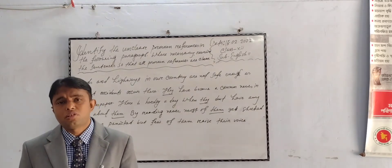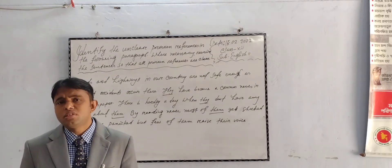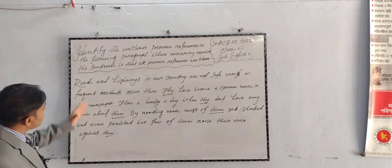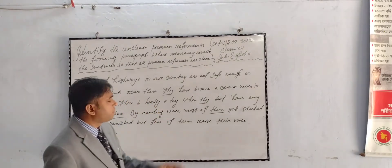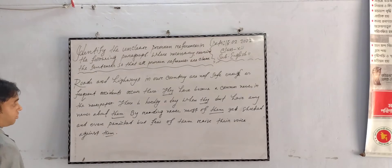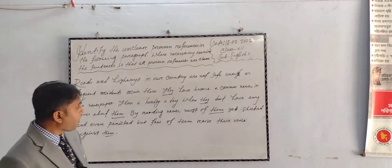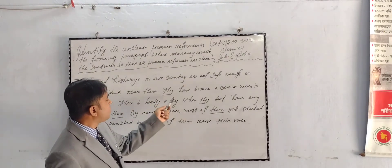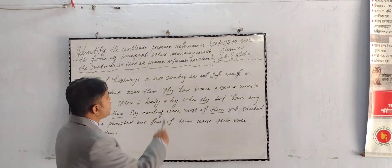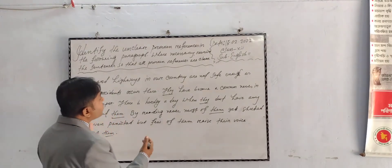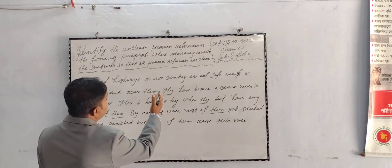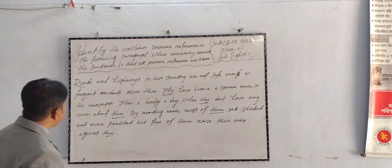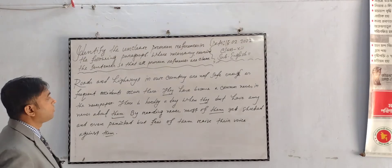We know that a pronoun is used as an alternative to a noun. In this paragraph, there are some pronouns that are very unclear. So we must identify these pronouns and use the noun as an alternative to the pronoun, because these pronouns are unclear. We must use the noun. So at first, we will read out the paragraph from the book.